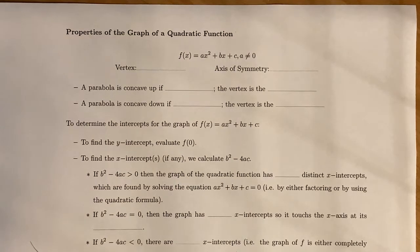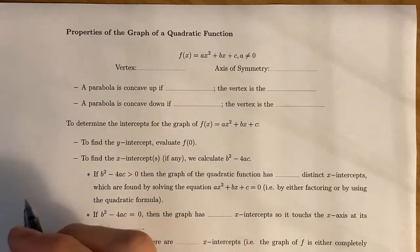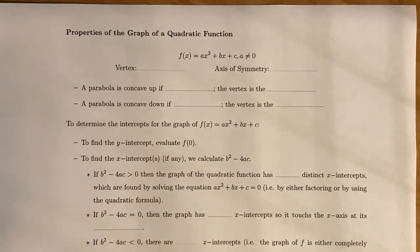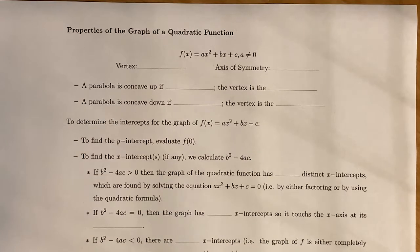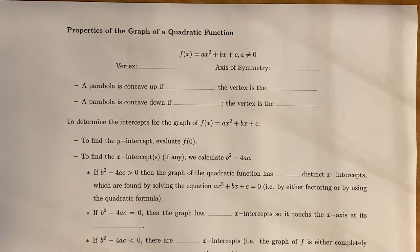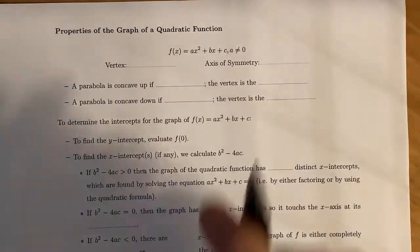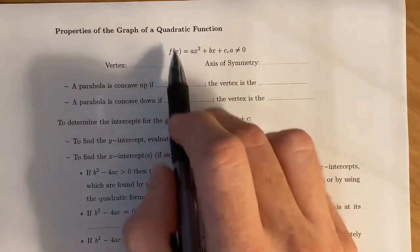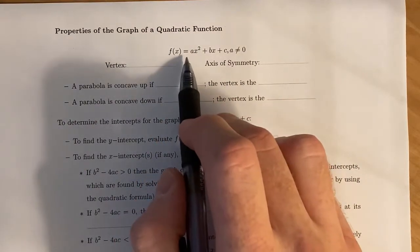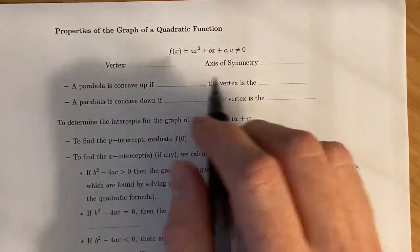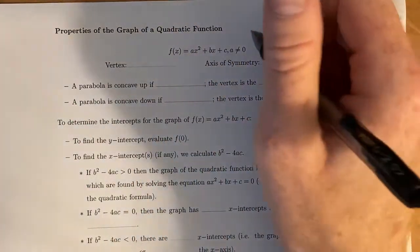Now that we've seen how to complete the square and how certain combinations of A, B, and C contribute to finding the vertex, we're going to look at quick ways of finding the vertex and the axis of symmetry if you're given a quadratic function in the form Ax squared plus Bx plus C.